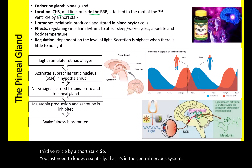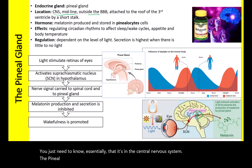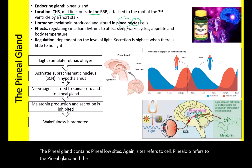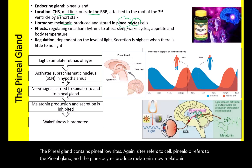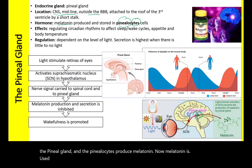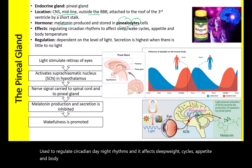The pineal gland contains pinealocytes — cytes refers to cell, pineal refers to the pineal gland — and the pinealocytes produce melatonin. Melatonin is used to regulate circadian day-night rhythms, and it affects sleep-wake cycles, appetite, and body temperature.